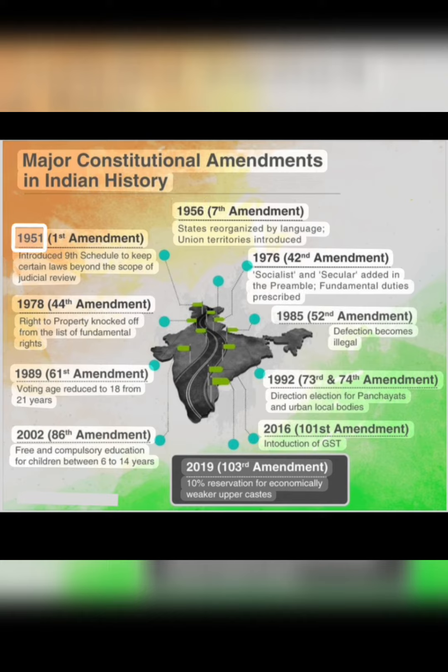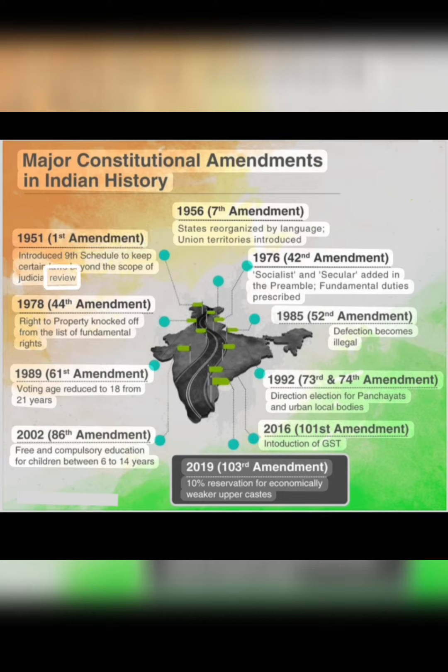1951, First Amendment: introduced the Ninth Schedule to keep certain laws beyond the scope of judicial review.